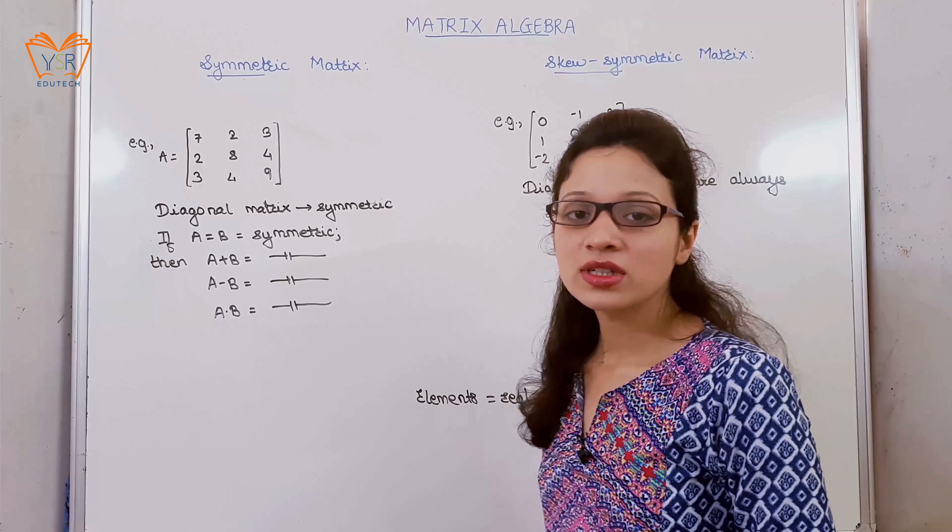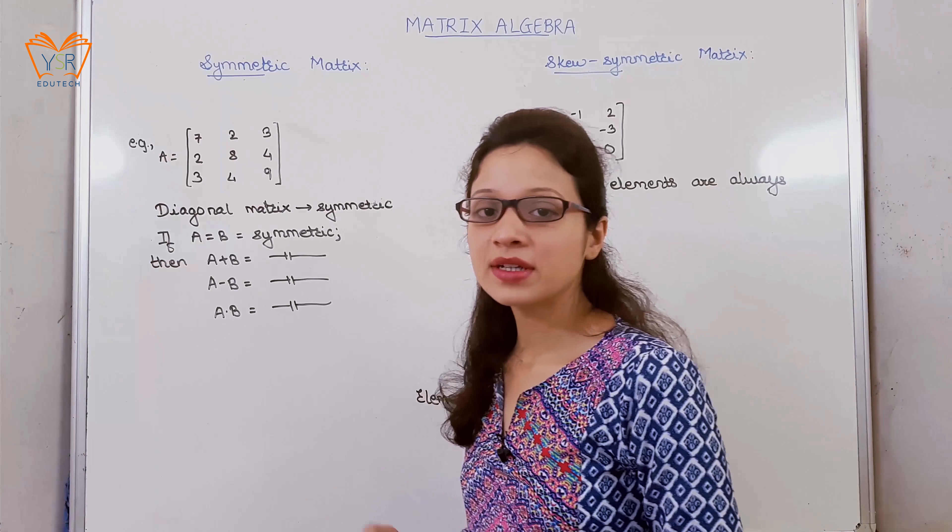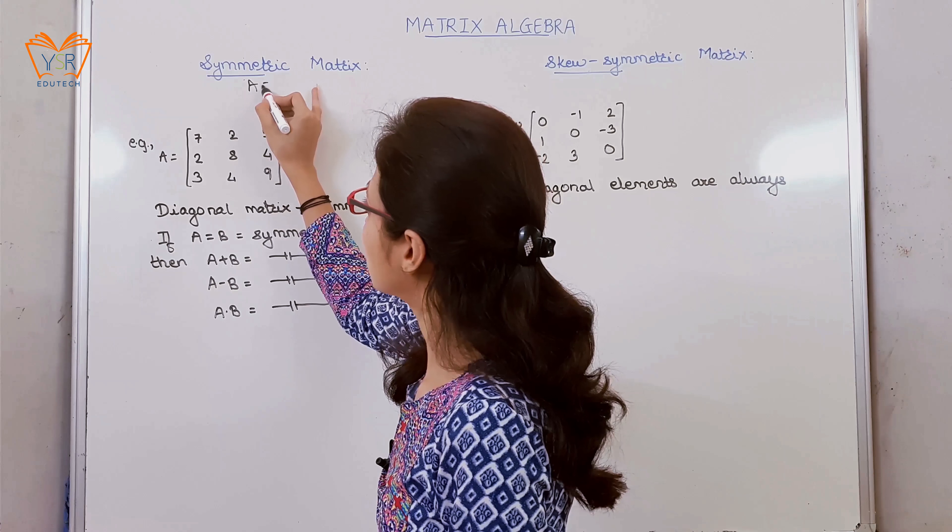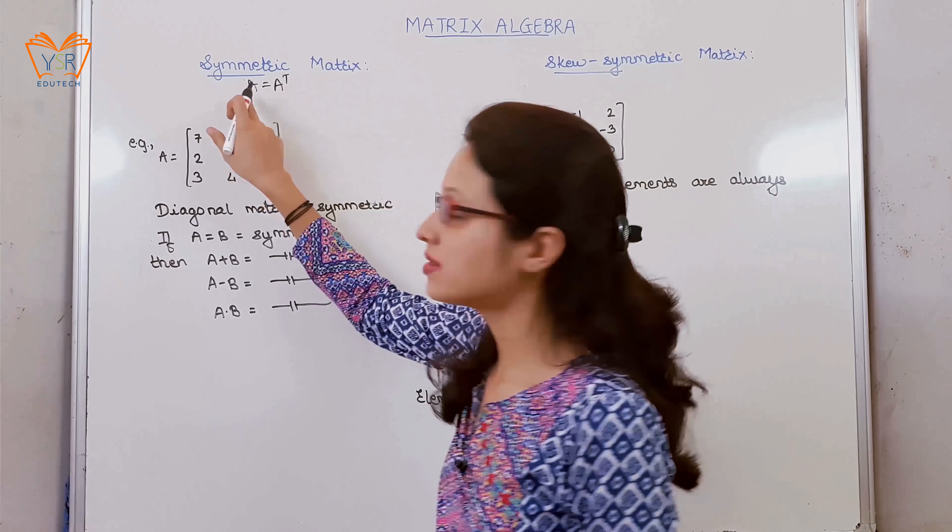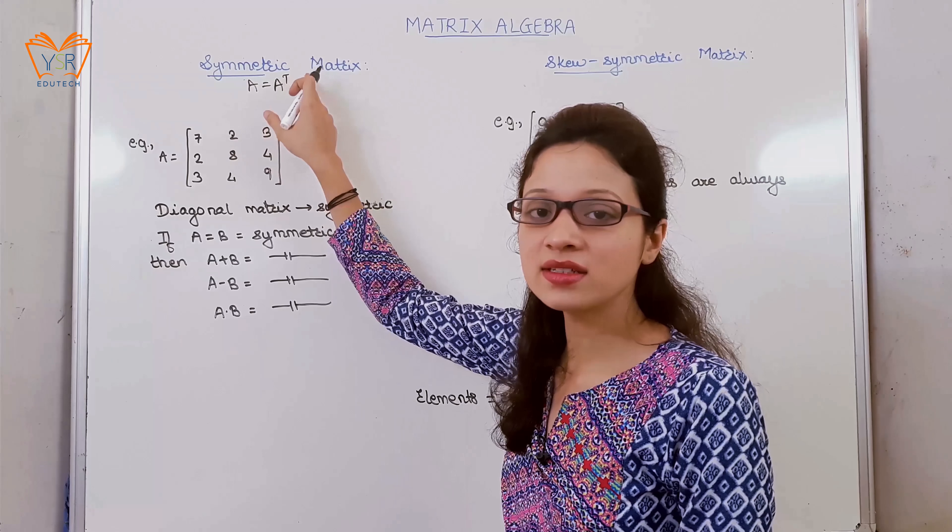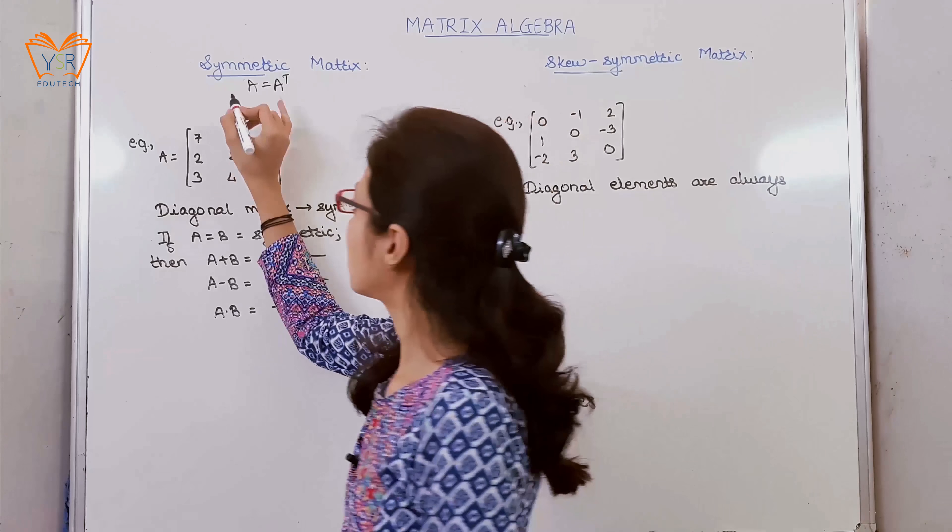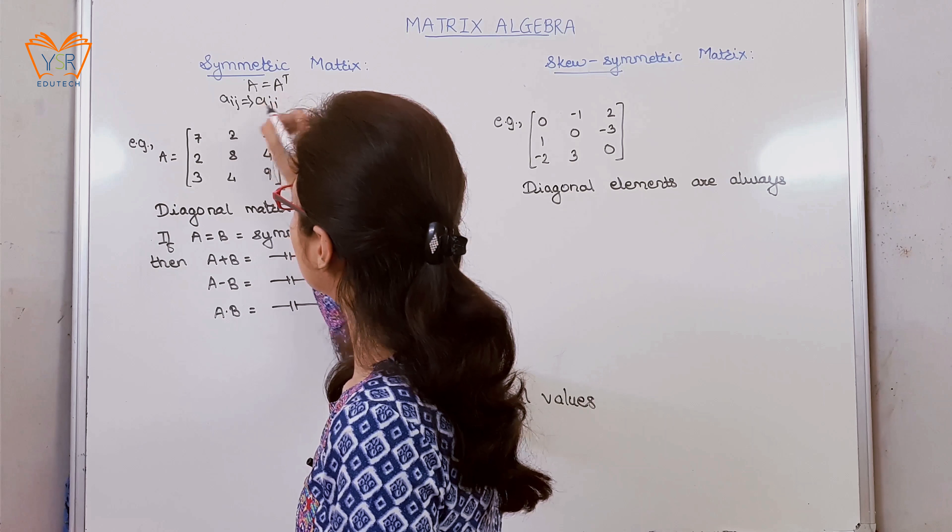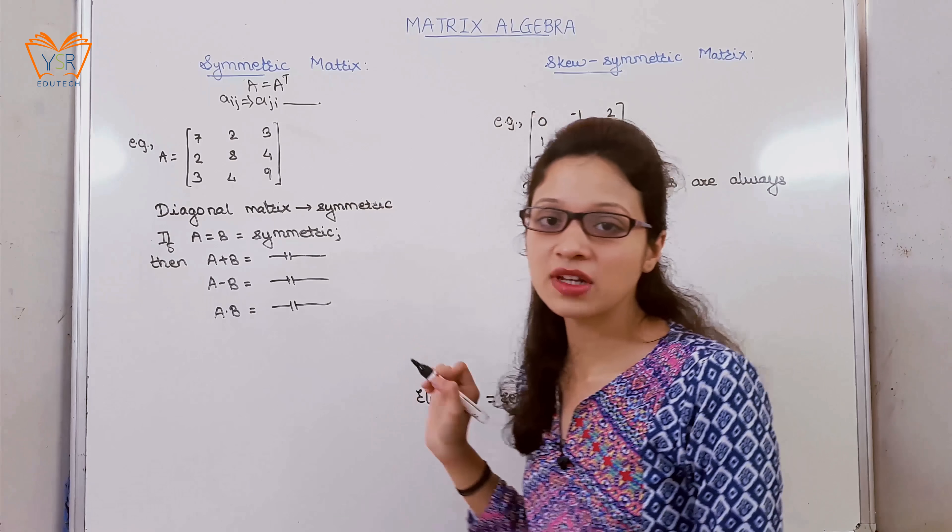Any square matrix is called a symmetric matrix if that matrix is equal to its transpose, that is A is equal to A^T, where A is any square matrix and A^T is transpose of that matrix. So we can write A_ij is equal to A_ji for all i,j values.